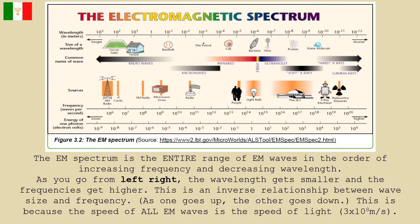According to increasing frequency, the electromagnetic spectrum displays the following waves. We have the radio waves, microwaves, infrared, visible light, ultraviolet, x-rays, and gamma rays. It is important to note that these waves do not have an exact dividing region. As you go from left to right, the wavelength gets smaller, and the frequencies get higher. This is an inverse relationship between wave size and frequency. As one goes up, the other goes down.